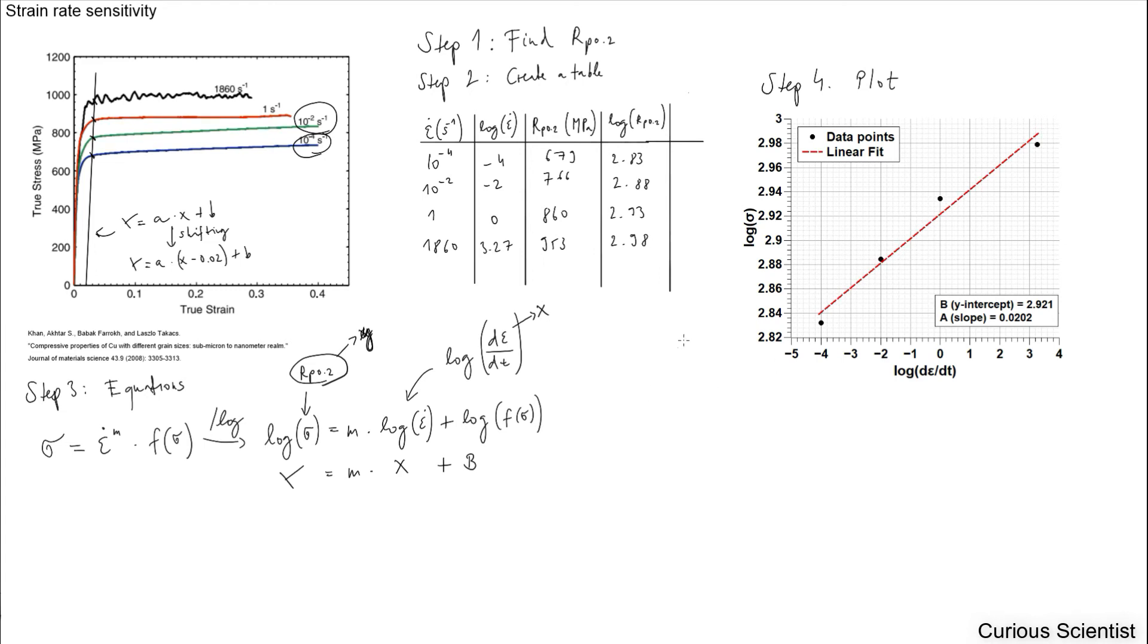So we have this plot with the four points that you can see in the table. I just put everything on the chart. This is epsilon dot and this is the RP 0.2. Why we need this is because if you see this equation here then the slope, which is now here A instead of M, the slope will give you the strain rate sensitivity. So M equals A equals 0.02, and that's all. You got the final result.